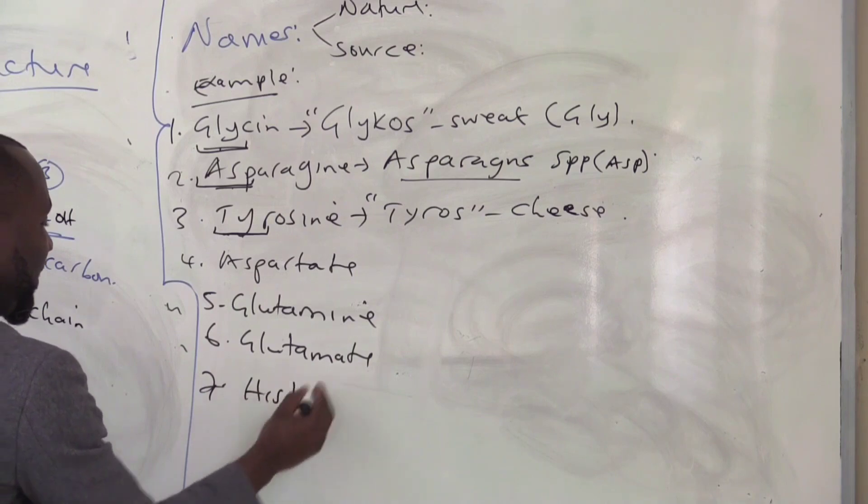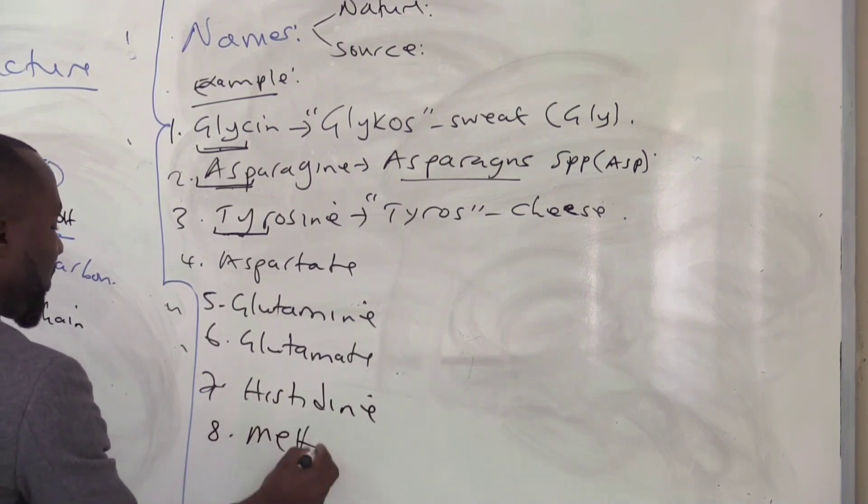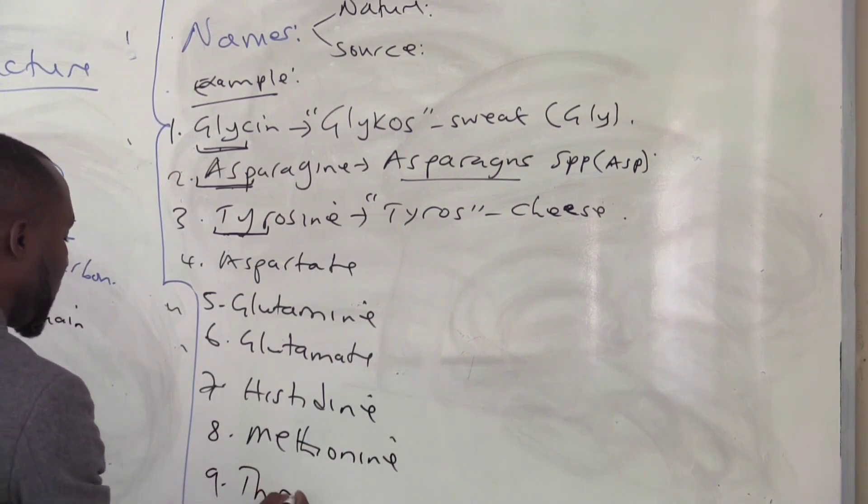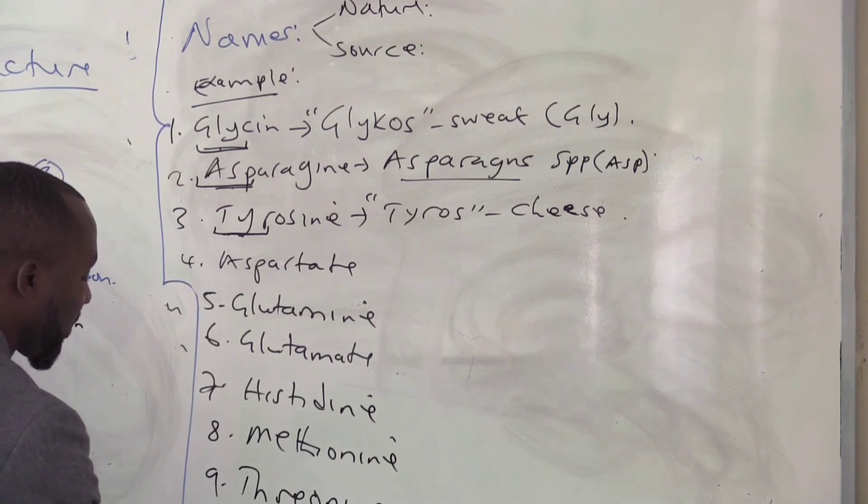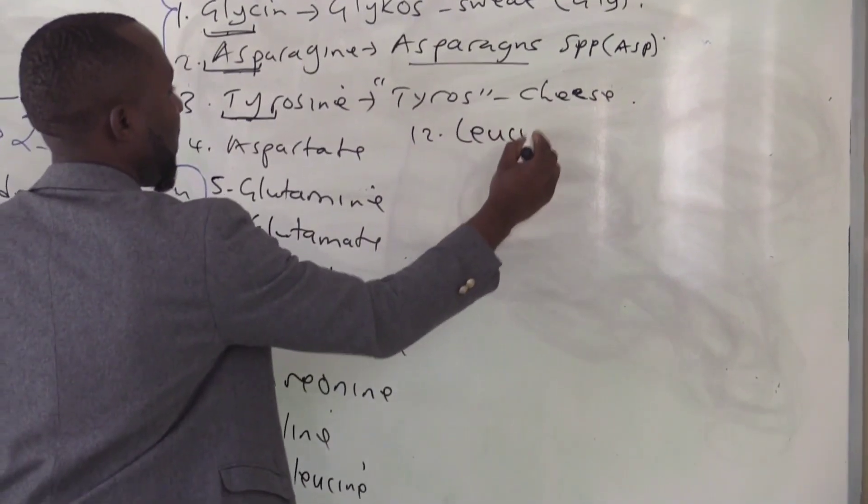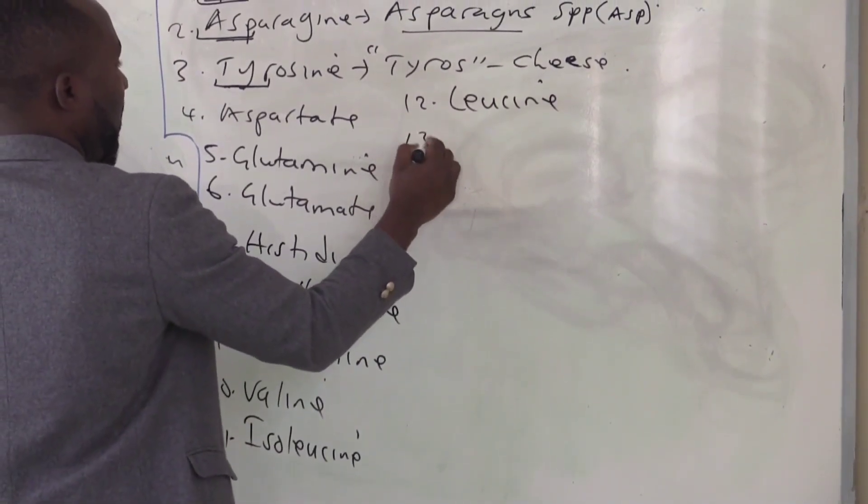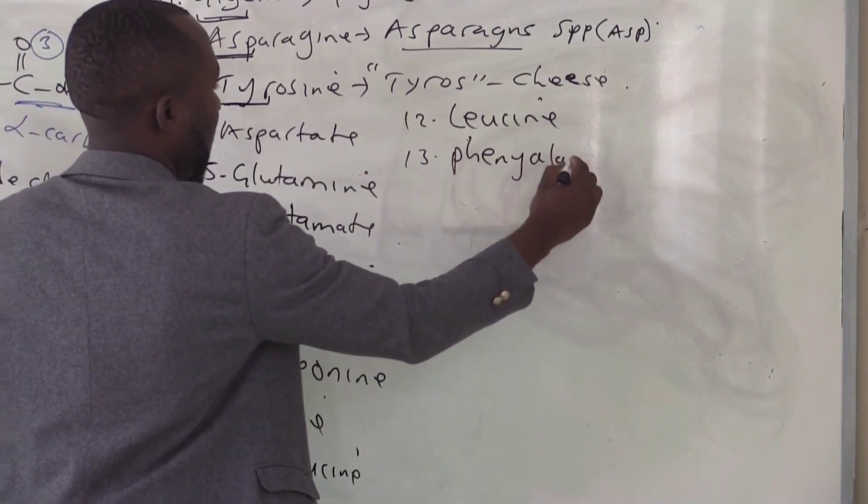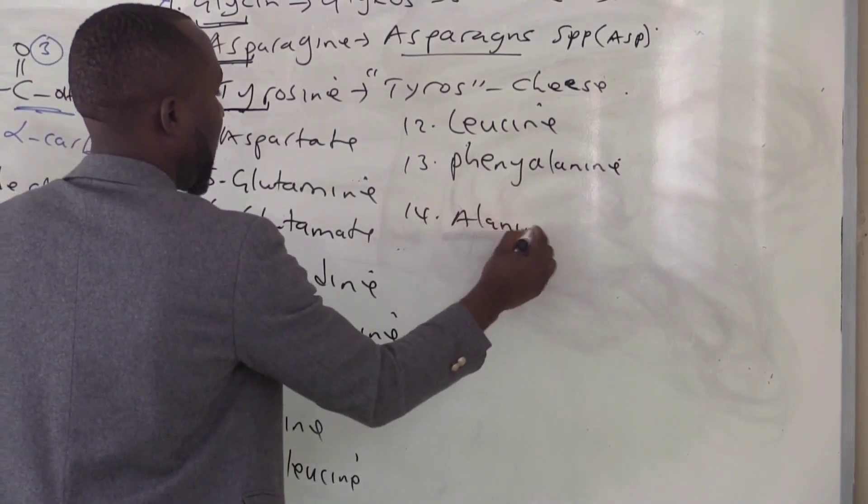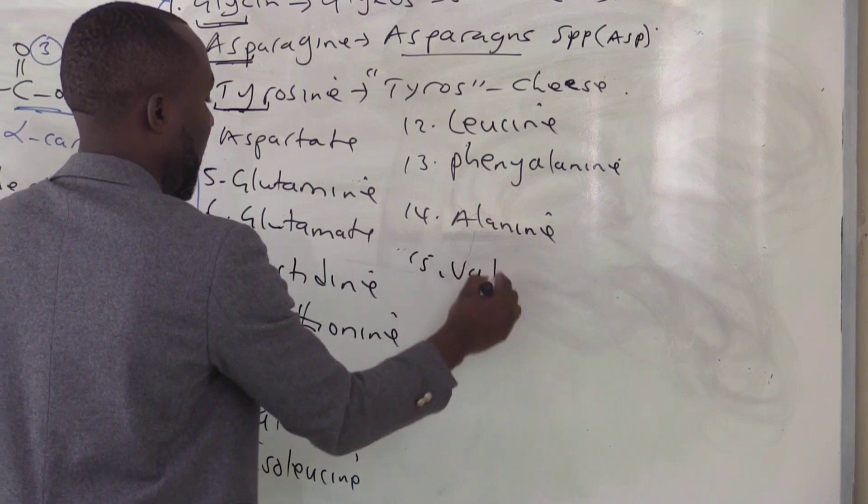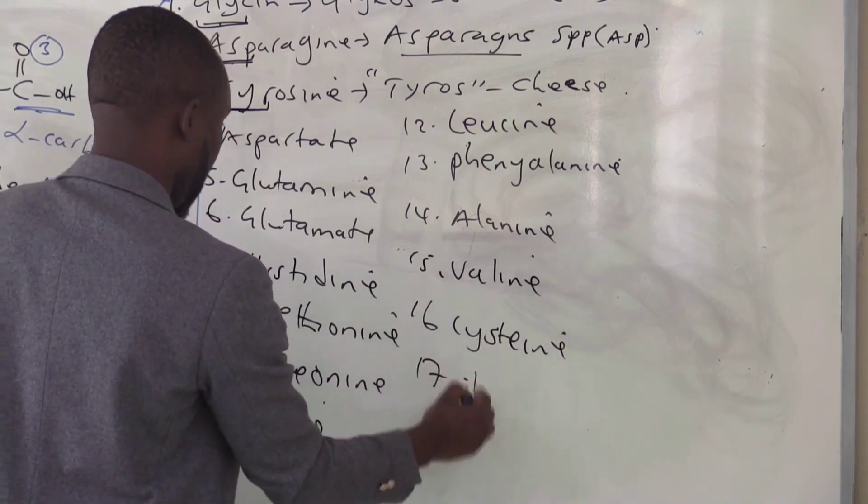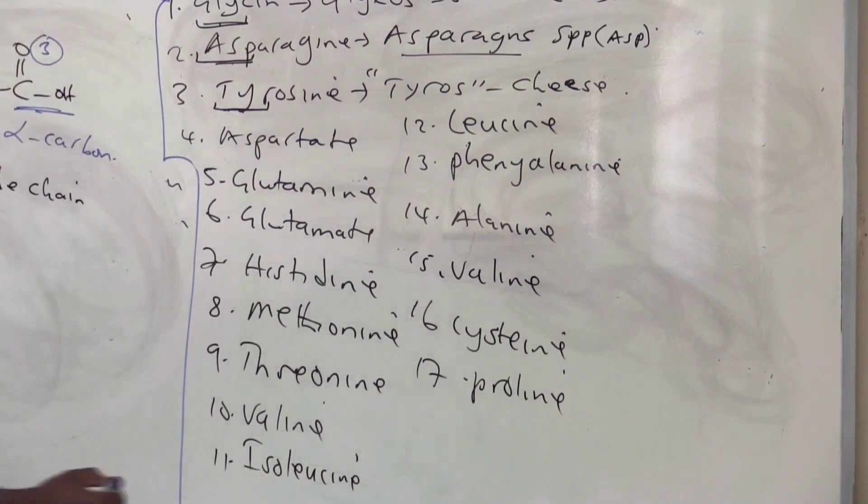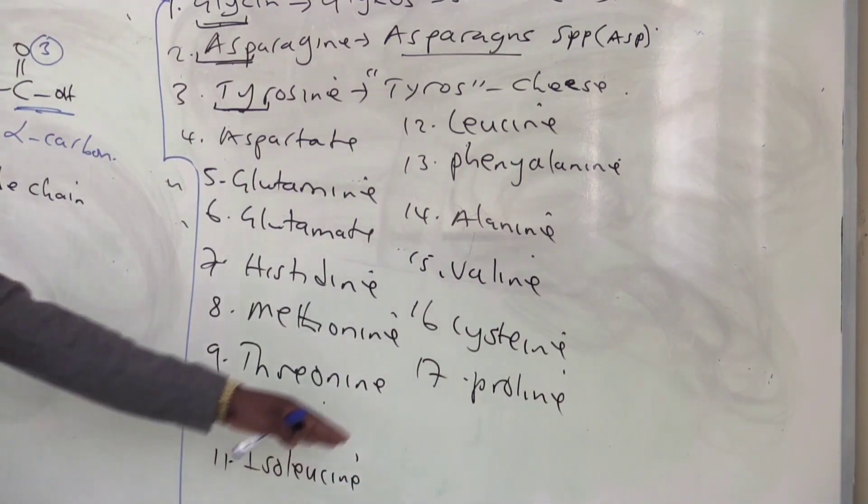Glutamine, histidine, threonine, valine, leucine, phenylalanine, alanine, valine, cysteine, proline. As you study, ensure that you give the other three examples.